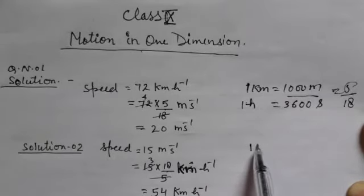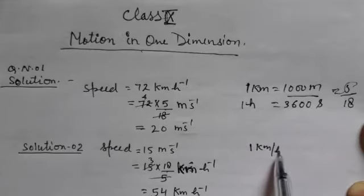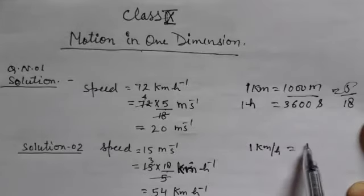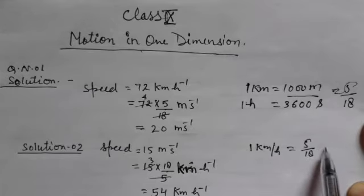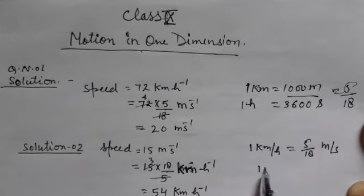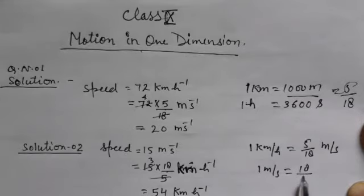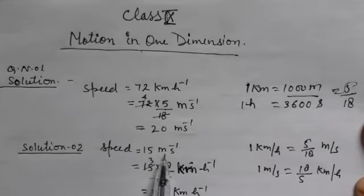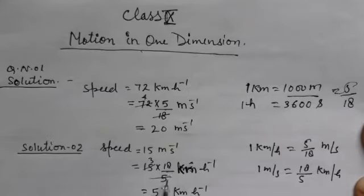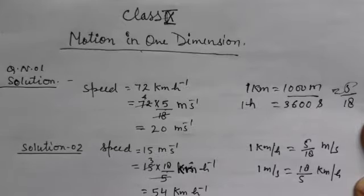1 km per hour is equal to 5 by 18, so 1 meter per second is equal to 18 upon 5 km per hour. Therefore, 15 meter per second is equal to 15 multiplied by 18 upon 5 km per hour. After solving, the result will be 54 km per hour.